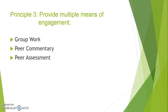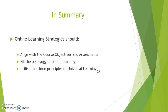Principle three: provide multiple means of engagement. By this, we mean that there should be different ways in which the student is engaged in the course — through group work, peer commentary, peer assessment, or direct engagement with the tutor. In summary, online learning strategies should do three things: align with the course objectives and assessments, fit the pedagogy of online learning, and utilize the three principles of universal design for learning.